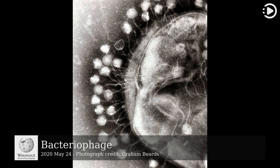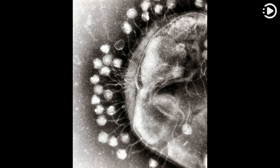A bacteriophage is a virus that infects and replicates within bacteria and archaea. Bacteriophages are among the most common and diverse entities in the biosphere, found wherever bacteria are present. Early evidence of their existence came when the English bacteriologist Ernest Hanbury Hankin reported in 1896 that something in the waters of the Ganges and Yamuna rivers in India had a marked antibacterial action against cholera, but was so minute that it could pass through a very fine porcelain filter.